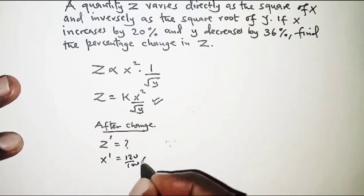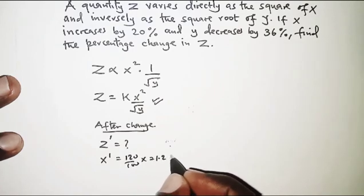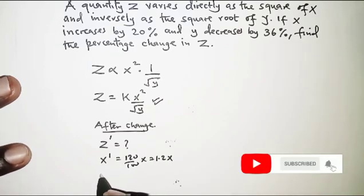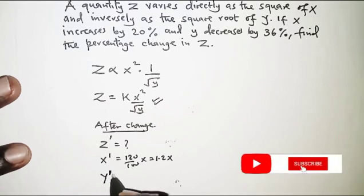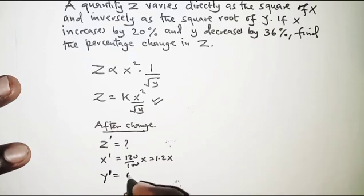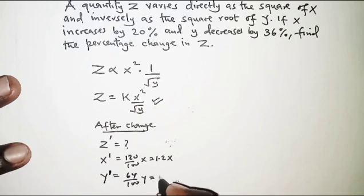But y decreases by 36%, that is 100 minus 36, so that is 64 over 100 y, which is 0.64y.